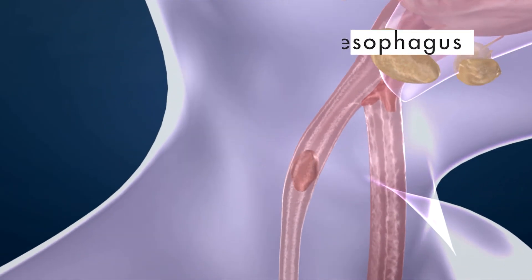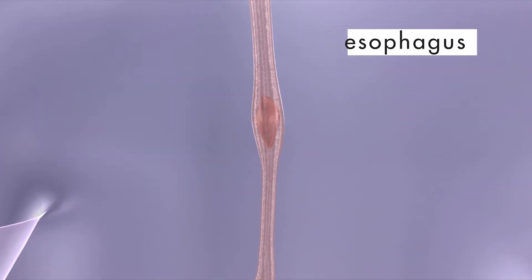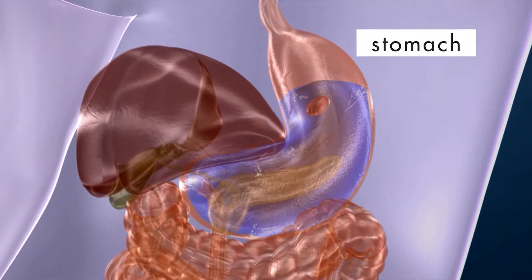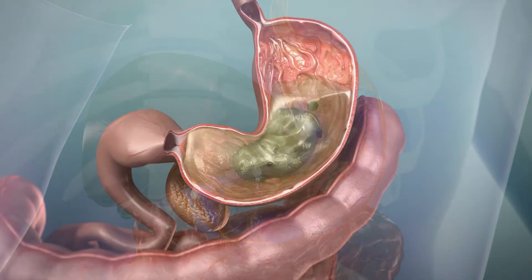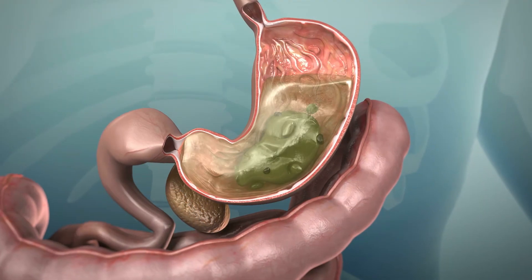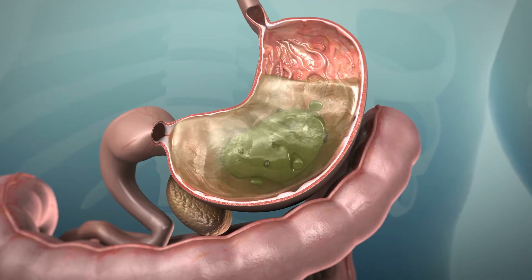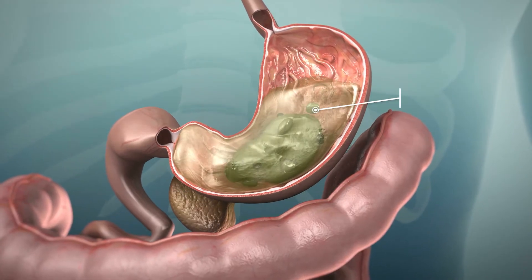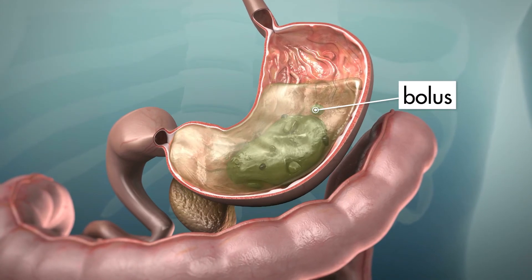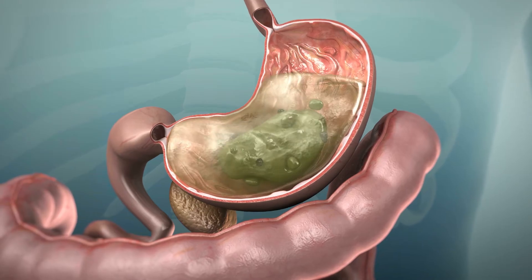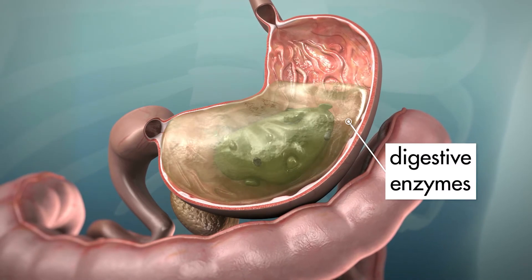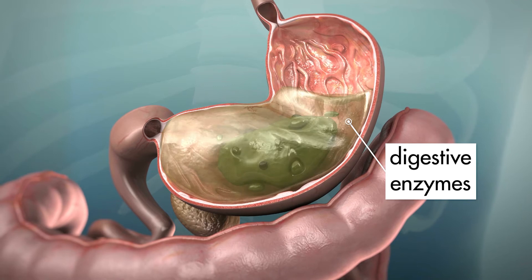After a bolus is swallowed, it passes down the esophagus into the stomach. In the stomach, mechanical digestion continues as the muscles of the stomach wall smash the bolus and break it into tiny particles. Chemical digestion also continues as the bolus is mixed with digestive enzymes.